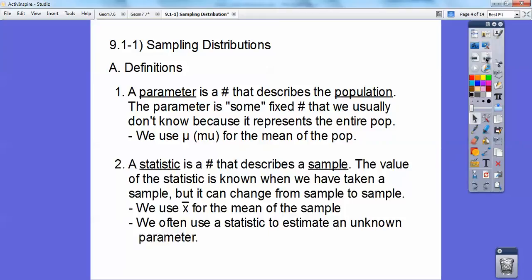So a statistic is a number that describes a sample. The value of the statistic is known when we have taken a sample, but it can change from sample to sample. In fact, it always changes from sample to sample. And we use x bar for the mean of the sample. So if you ever see x bar, that's the mean of the sample. If you ever see mu, that's the mean of the population. And we often use statistics to estimate our unknown parameter. And our parameter, remember, is our population. That's what it says right here.